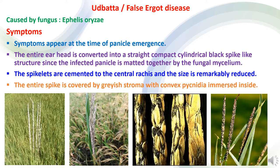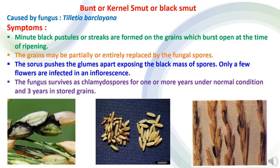Next is udbatta disease or false ergot disease of rice, caused by the fungus Ephelis oryzae. The symptom appears at the time of panicle emergence. The entire ear head or spike is converted into a straight, compact, cylindrical, black spike-like structure because of fungal mycelium growth. The spikelets are cemented to the central rachis and the size of the panicle is reduced remarkably. The entire spike is covered by grey stroma due to conidia immersed inside and their growth.